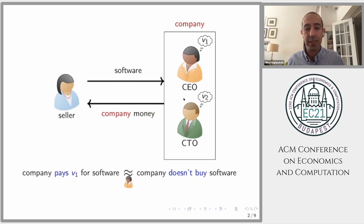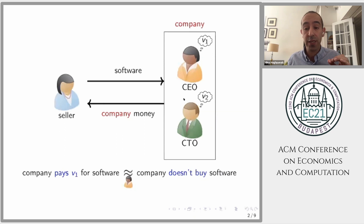We don't take a stance on where these values come from or why they could be different. But just so you have some story in mind: these values may differ because agents have different opinions about the opportunity cost of spending money elsewhere. For example, the CEO may think that if they don't buy the software, the company can use that money to hire people in marketing, giving her a low value. But the CTO, who only cares about improving the company's tech, has a higher value for this software.